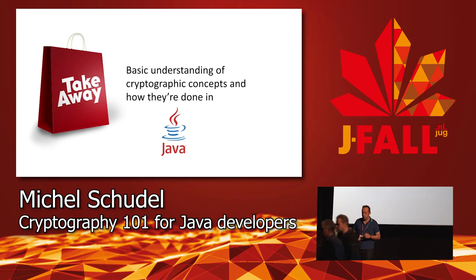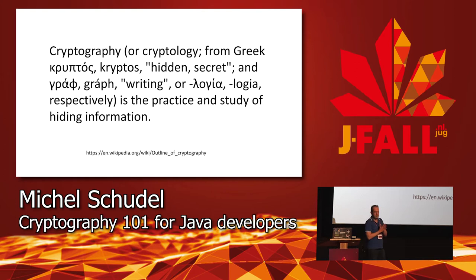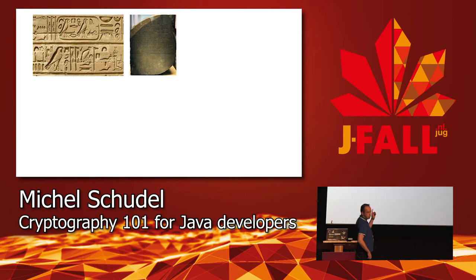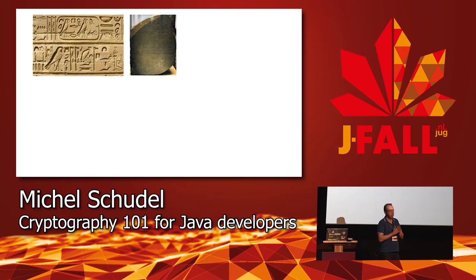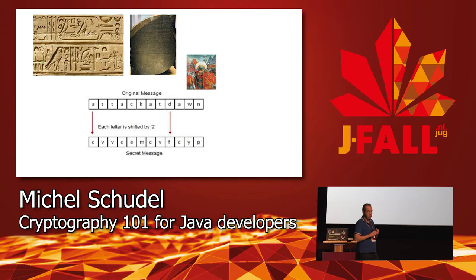Today we're going to talk about cryptography - a basic understanding of cryptographic concepts and how they're done in Java. Cryptography is the practice and study of hiding information, and it's been around for a long time. The Rosetta Stone had Egyptian hieroglyphs, Demotic scripts, and Greek, which helped decipher the hieroglyphs. It was found around 1969 or so, but the practice goes back much further.